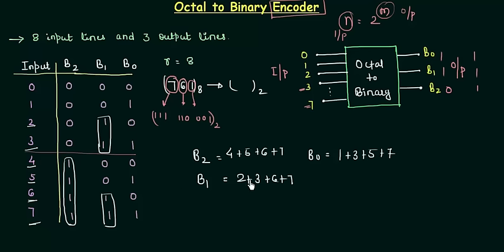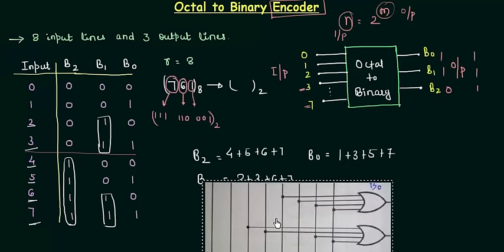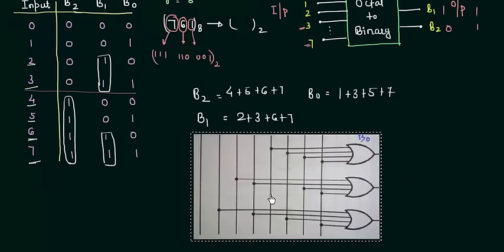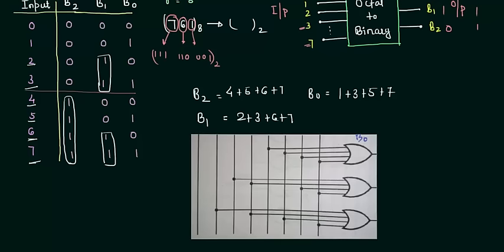This is what we have to find from the truth table. Now let's move to the implementation part. Again, I have copied it from the book because we don't have time to implement it. It's a very simple implementation, so you can do it by yourself. You can cross-check from this circuit.